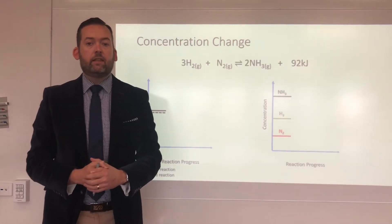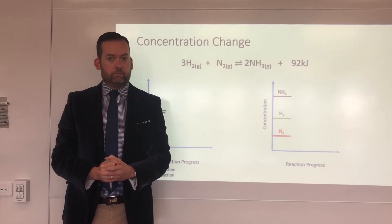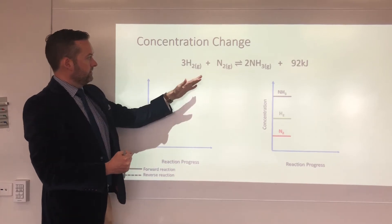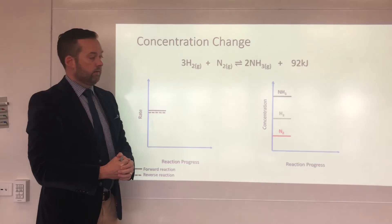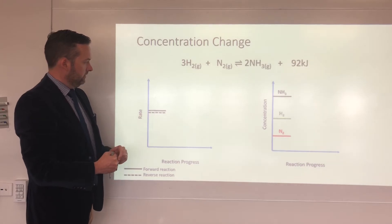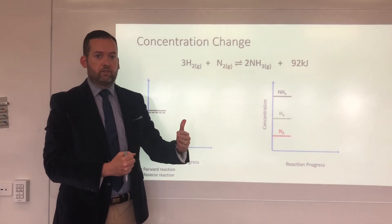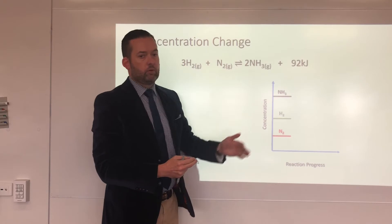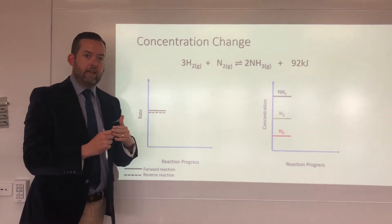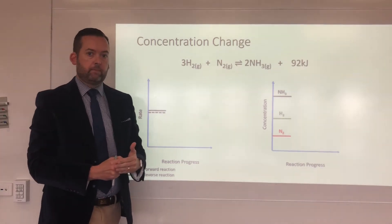So let's look at the three different things that can affect equilibrium: concentration, pressure, or temperature. For each of the three examples I'm going to use the same graphs. Here's our reaction — the Haber process — an exothermic process in the forward direction. We have a rate graph with reaction progress, with the solid line being the forward and the dotted being the reverse, or we have a concentration graph. These positions are arbitrary — just showing them separated so you can see what happens. For the rates, forward and reverse need to be on the same line; they are the same at equilibrium.